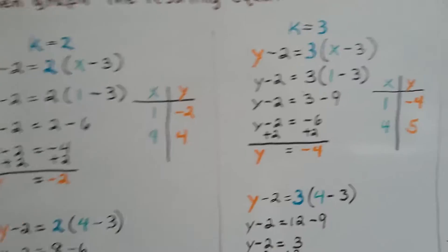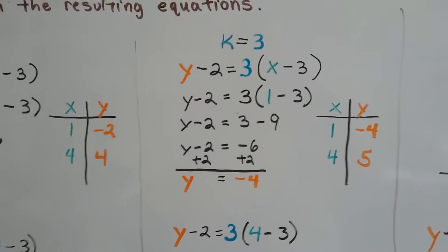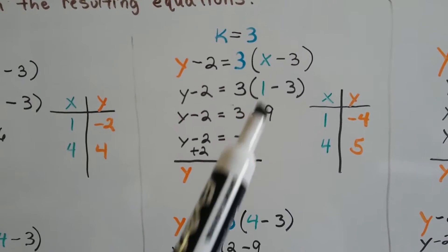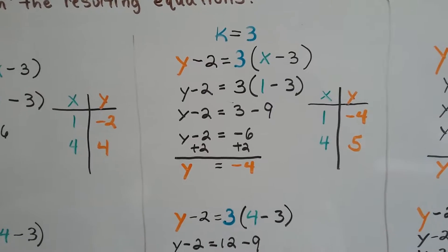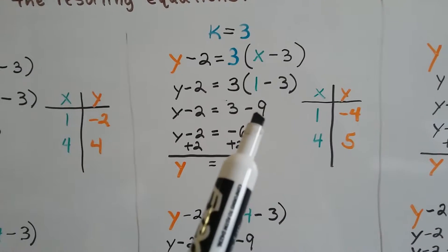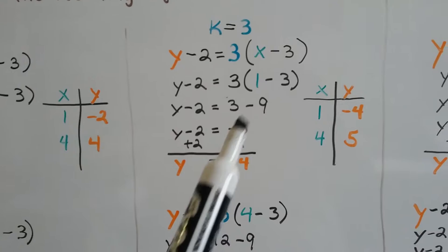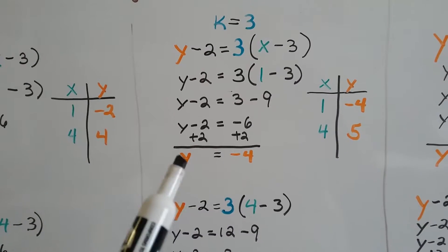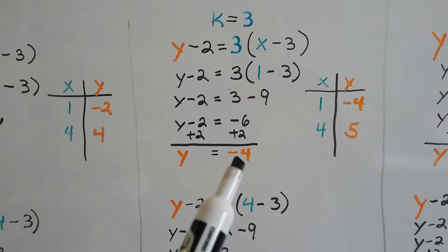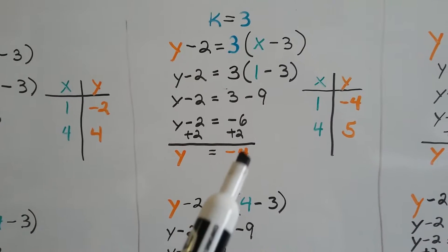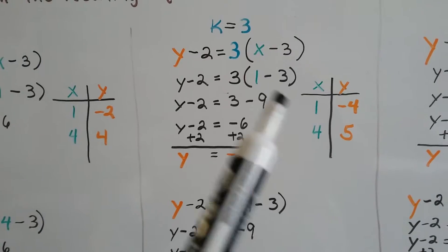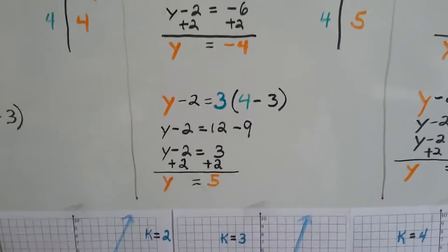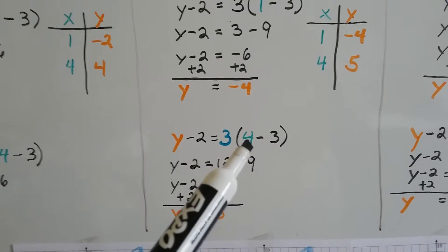Now we're going to do it where k equals 3. We're going to do the exact same math. We're going to replace the k with a 3, set x to equal 1. 3 times 1 is 3, and 3 times negative 3 is negative 9, so we get negative 6 here. We're going to isolate the y, so we're going to add 2 to both sides to create a zero pair here, and we get y equals negative 4. See, negative 6 plus 2 is negative 4. So now we have 1 for x and negative 4 for y. We need the second ordered pair.